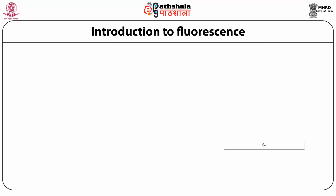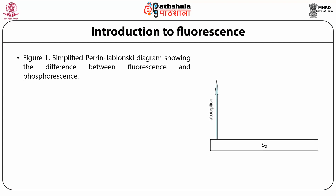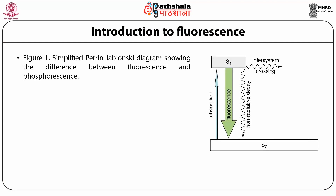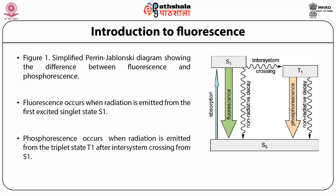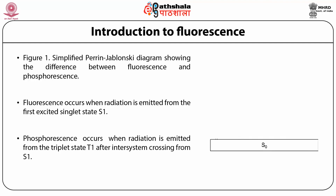The figure presented here is a simplified Perrin-Jablonski diagram showing the difference between fluorescence and phosphorescence. Fluorescence occurs when radiation is emitted from the first excited singlet state S1, and phosphorescence occurs when radiation is emitted from the triplet state T1 after inter-system crossing from S1. The inter-system crossing can be due to any reason, like the heavy atom effect.